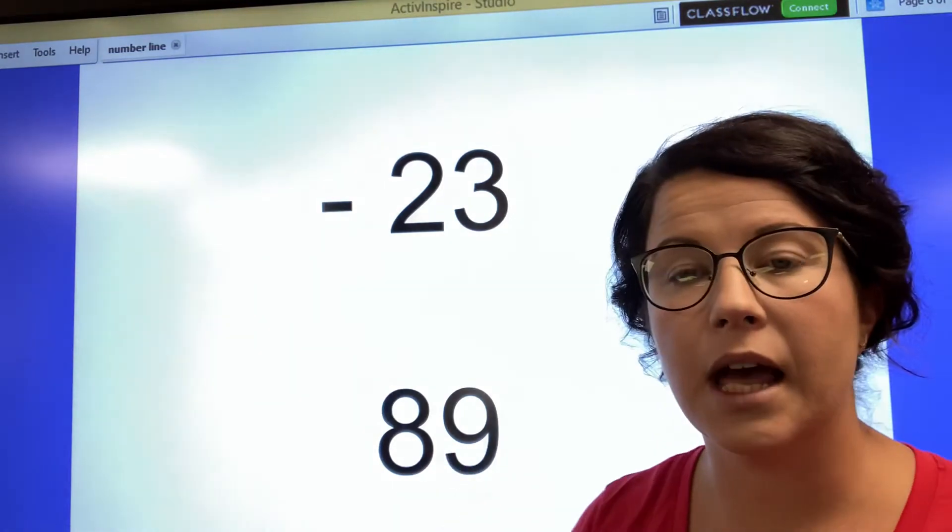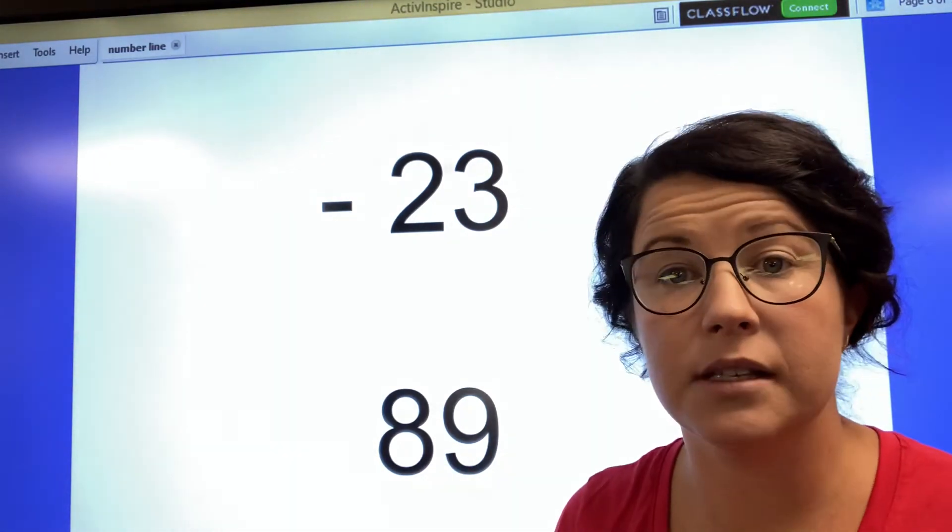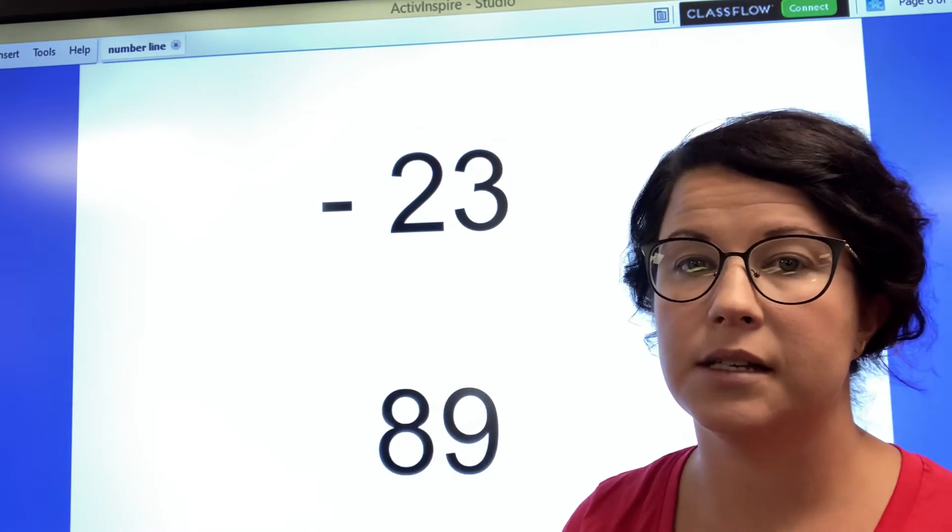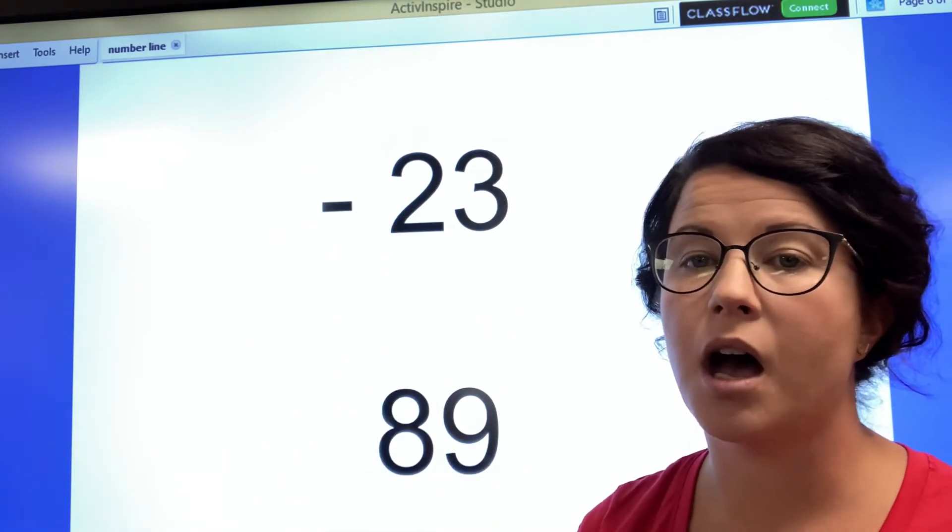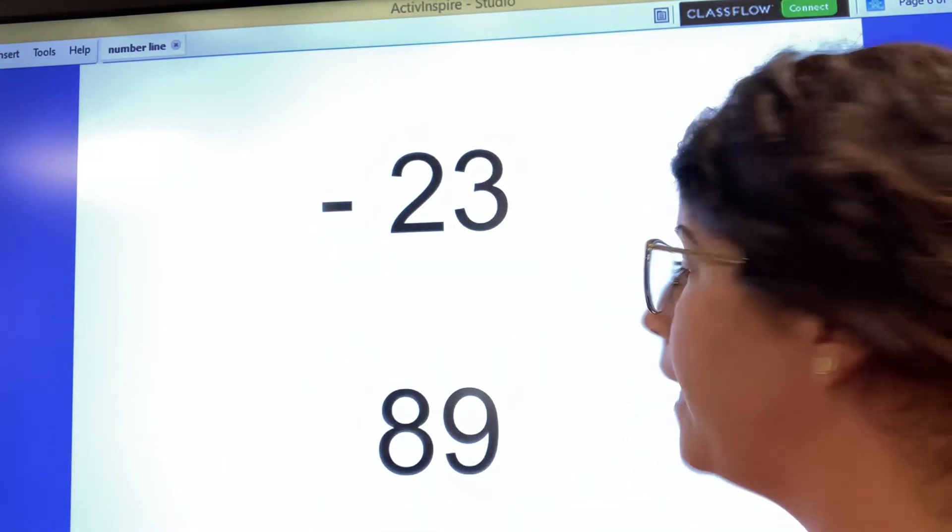And down here is 89. There's no sign, so that means it's positive 89. All we need is the sign to be negative. So we have a negative number at the top and a positive number at the bottom.